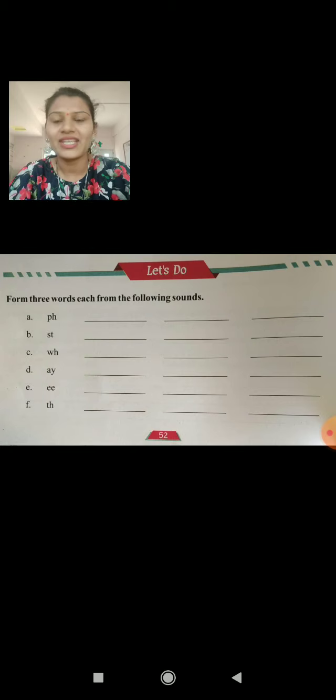So next, let's do. Form three words for each sound. Here are some sounds, so form three words for each sound. First, P-H. P-H, f. Phone. P-H-O-N-E. Phone. Next, physics. P-H-Y-S-I-C-S. Physics. Next, S-T. S-T-A-N-D. Stand. S-T-A-Y. Stay. Last word is for you. Tell me fast, you have to make the last words.